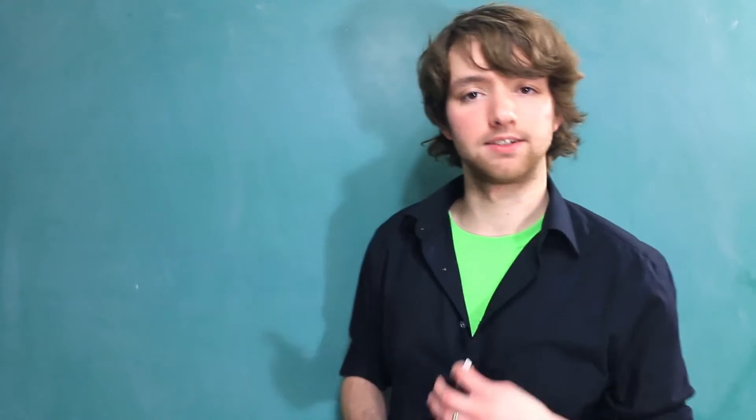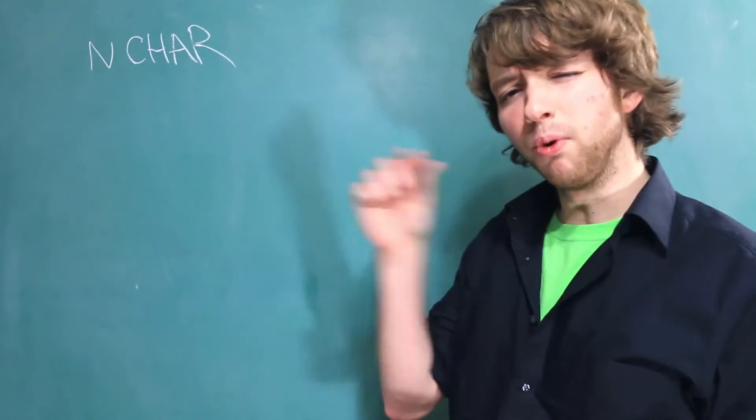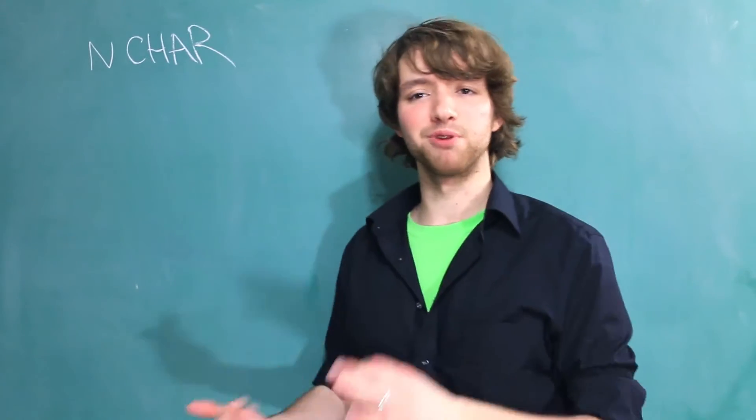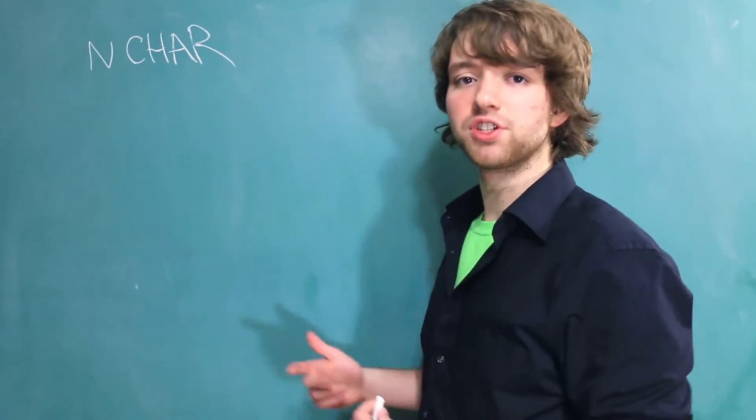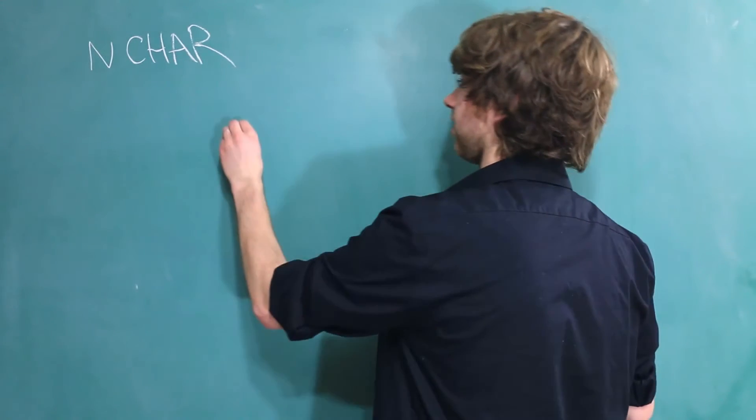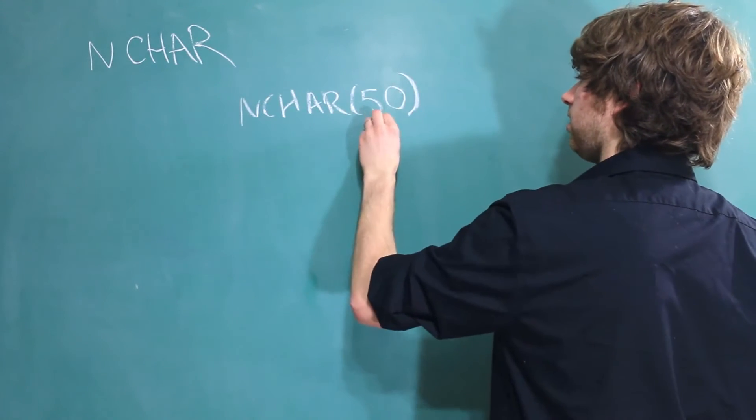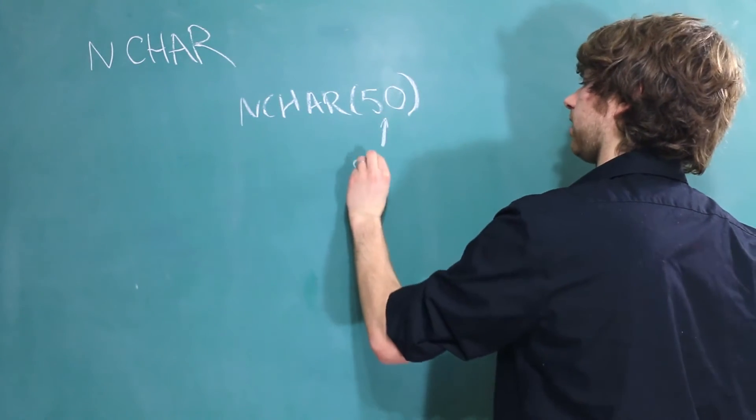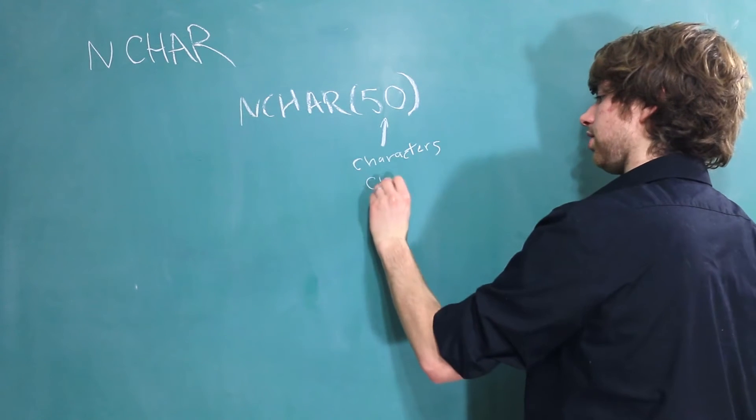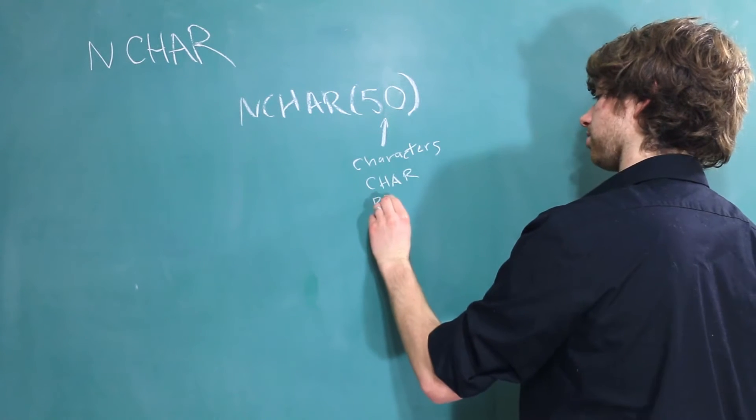So this video is going to be a continuation of the n char data type. That's because I just had a couple more little things that I wanted to explain before we move on to the next data types. The first thing is that when you declare an n char, for example n char 50, this is always going to be talking about characters. That means the char and byte keywords do not apply for this data type.